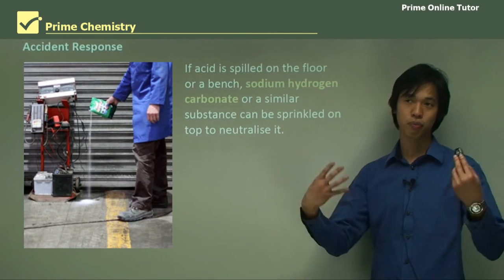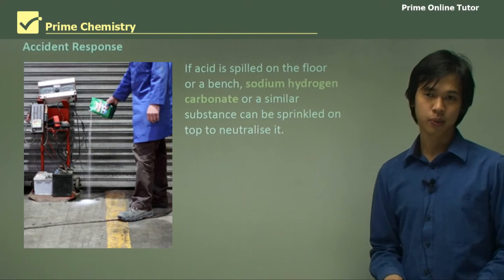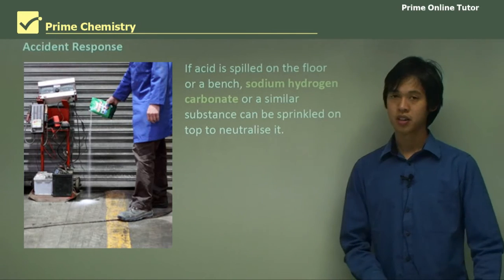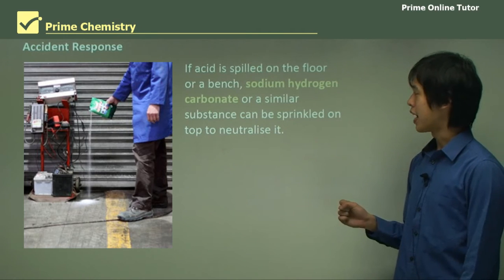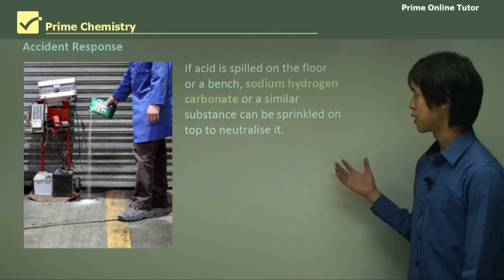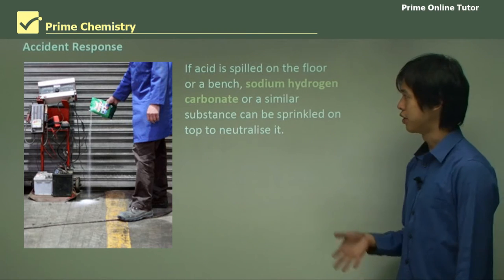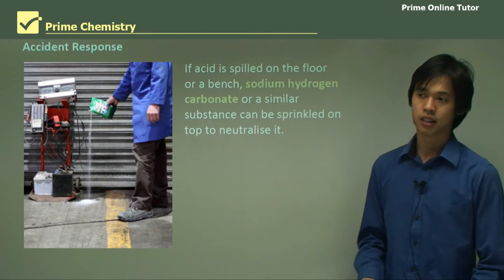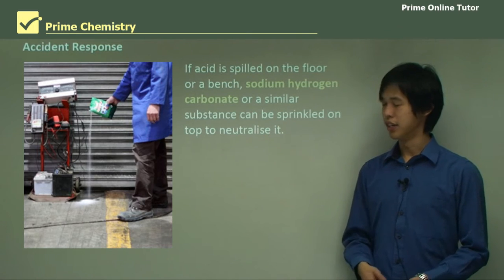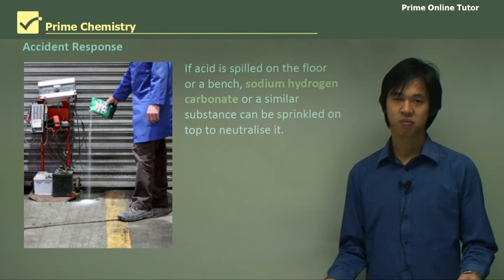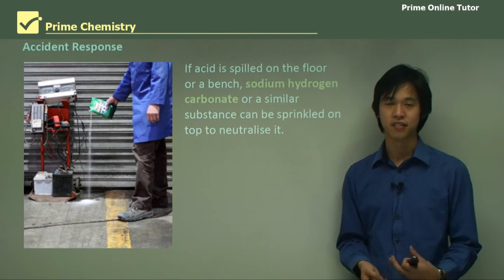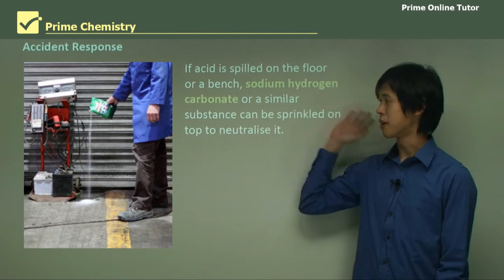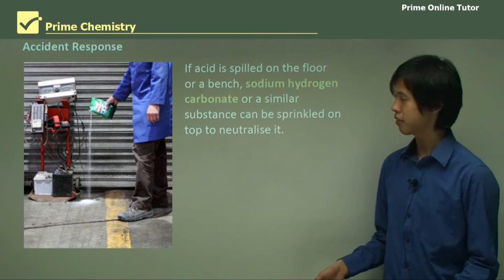Now that we've protected ourselves, we need an accident response protocol, because humans make mistakes. If acid is spilled on the floor or on the bench, sodium hydrogen carbonate or a similar substance can be sprinkled on top to neutralize it. You could use sodium hydrogen carbonate, baking soda, or sodium bicarb — or you can use sodium carbonate. Just not something like sodium hydroxide, where you'd have a huge release of heat from the acid and base mixing together. Sodium hydrogen carbonate or sodium carbonate would be fine.